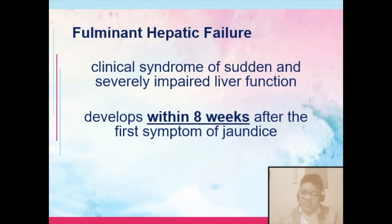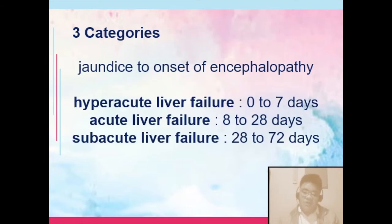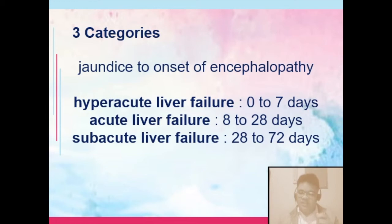The failure develops within eight weeks after the first symptom of jaundice. There are three categories for fulminant hepatic failure, differentiated by the number of days between the onset of jaundice and the onset of encephalopathy — the occurrence of neurologic signs and symptoms because of excess waste products in the body. It is referred to as hyperacute if encephalopathy occurs within seven days, acute if 8 to 28 days, and subacute if 28 days to 72 days.